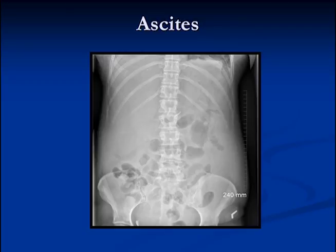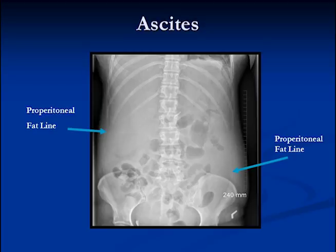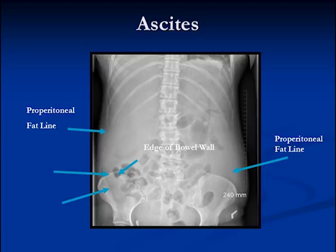When a patient gets fluid in the abdomen, there's separation of the bowel from the properitoneal fat line, as in this case of a patient with ascites. You can see the properitoneal fat line, and you can also see the edge of the large bowel — this is cecum — but it doesn't sit immediately adjacent to the fat line. In between the bowel and the fat line is fluid, and this is called fluid in the paracolic gutter, with a paracolic gutter on both sides.